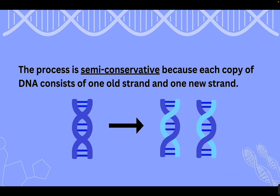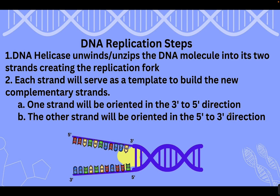Before we get to the specific steps, the process is called semi-conservative, meaning to save some, because each copy of DNA consists of one old strand of the original DNA that serves as a template and one new strand. As shown in the diagram, we start with the original DNA and end up with two molecules, but each one has one strand of that original DNA.